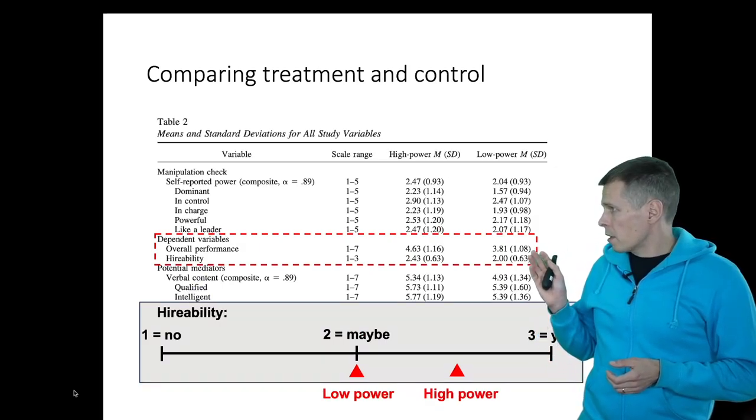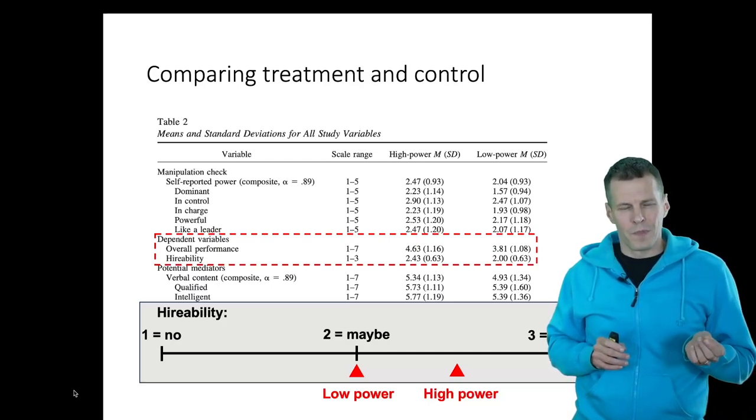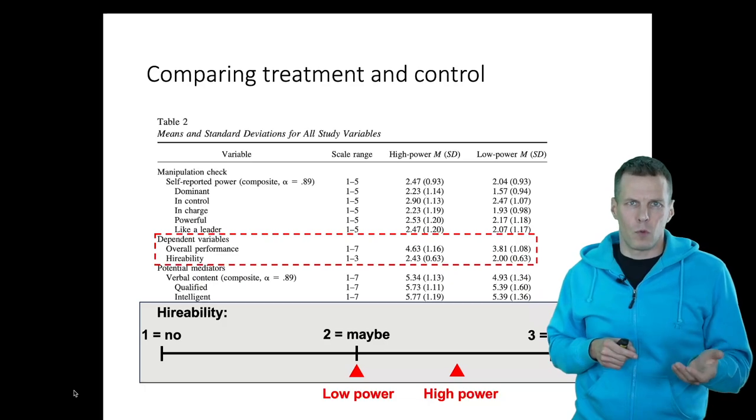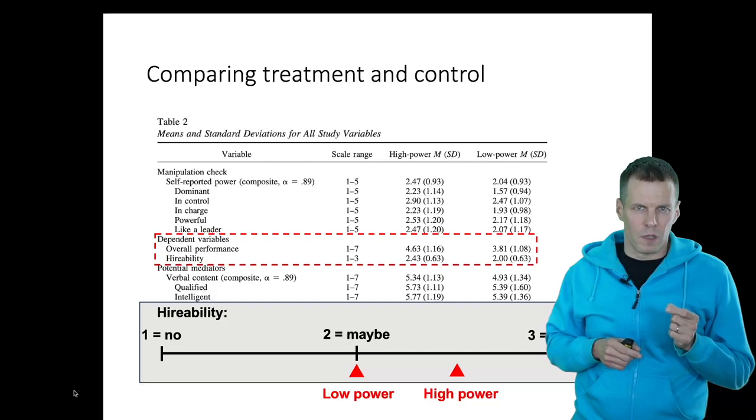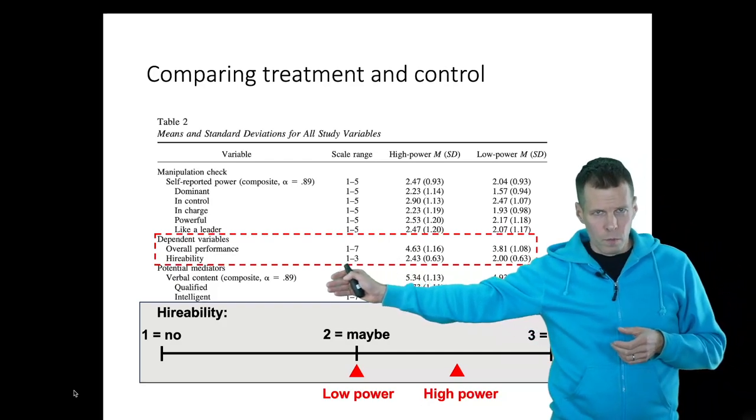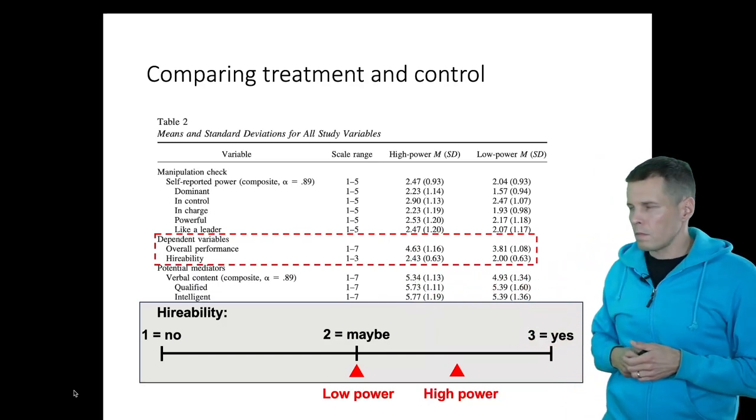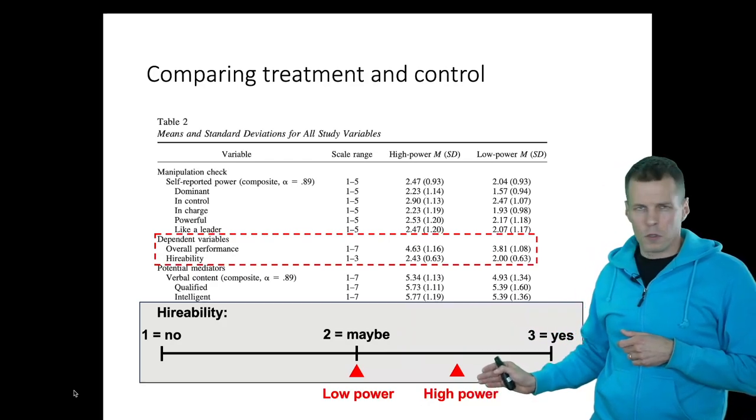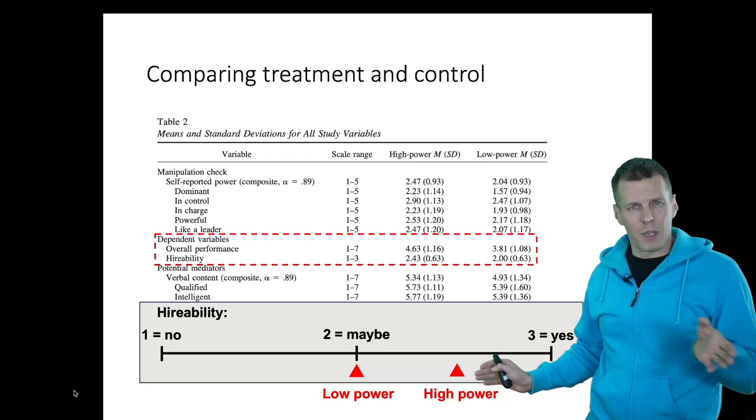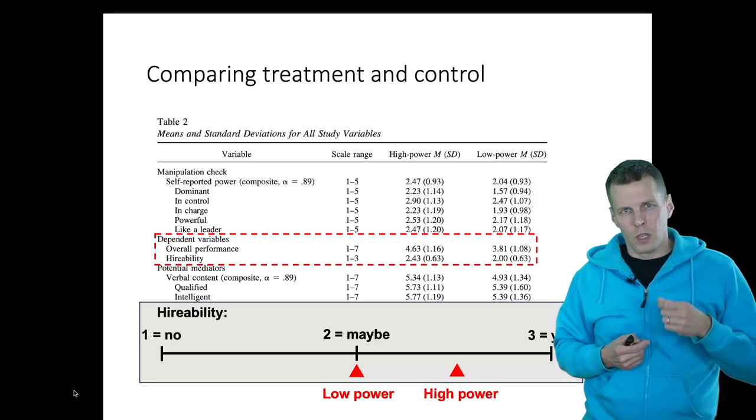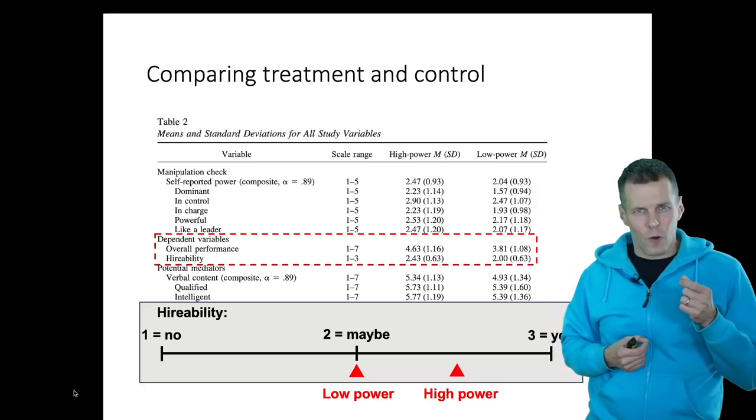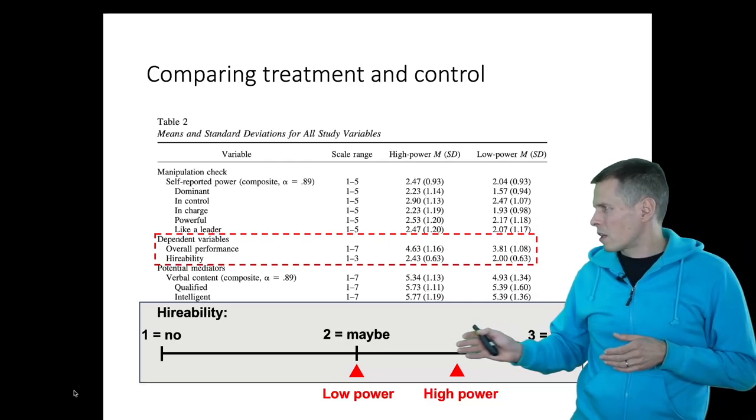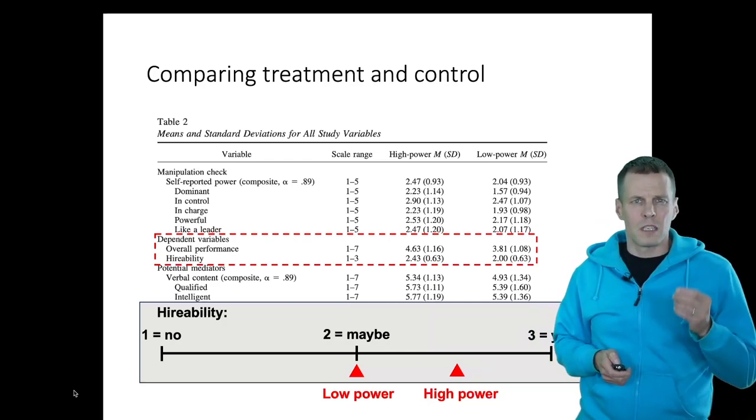When we look at these values, let's focus on hireability. We need to compare 2 against 2.43 - is that a big difference or not? It's in the decimals, so we might say that's a small effect. But what we really need to look at is the range of the variable. The range here is from one no, two maybe, three yes. On average, these low power posing people were right at the maybe, and high power posing students were almost halfway between maybe and yes. So the conclusion here is that by adopting a power pose, you can get your performance from the maybe category halfway to the yes category. That is a pretty substantial effect if you think about what other things you could do to gain that kind of bump in performance.